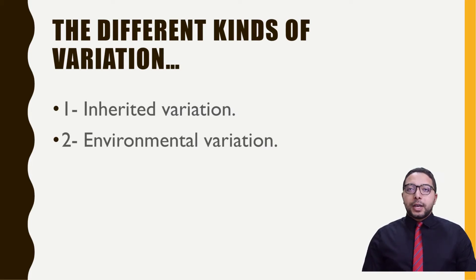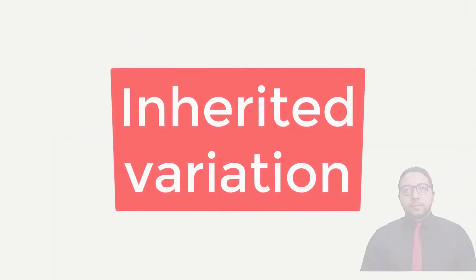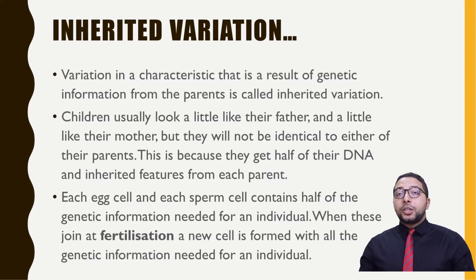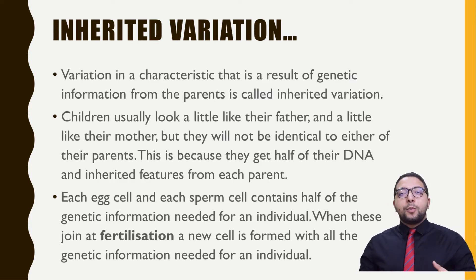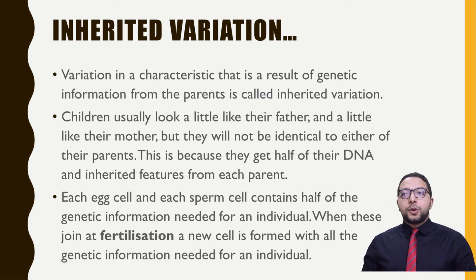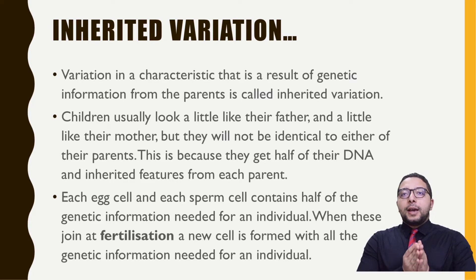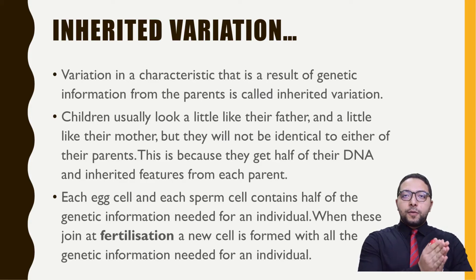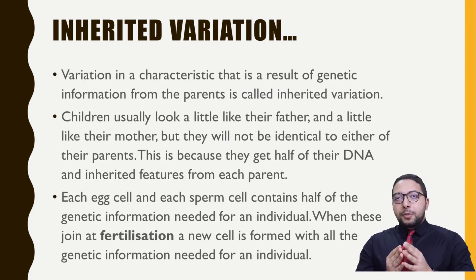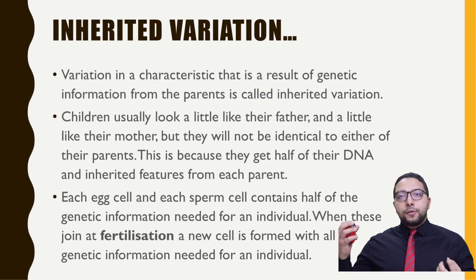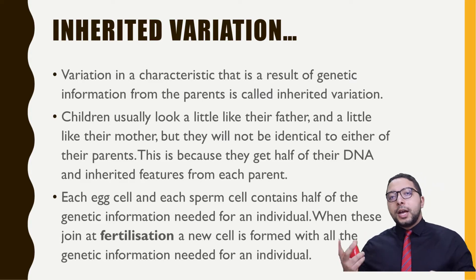We have two different kinds of variation: inherited variation and environmental variation. Inherited variation is based on inheritance — it came as a result of passing genes or DNA information from the father and mother to the offspring. Children usually look a little like their father and a little like their mother, but will not be identical to either, because the offspring takes half of the genes from the father and the other half from the mother.